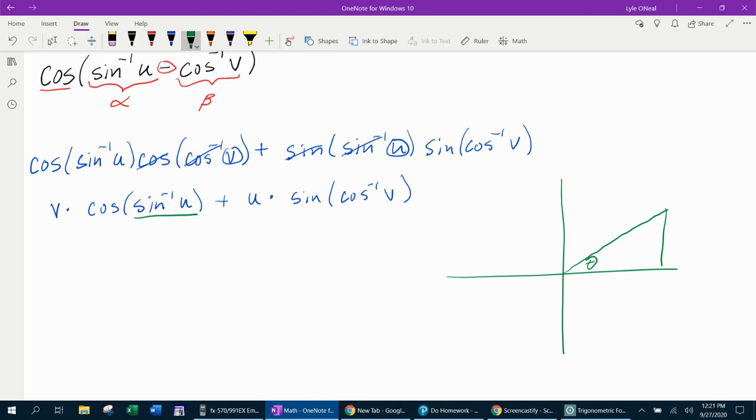Let's do this guy first in green. So remember that sine is y over r and u as a fraction would be u over one. So that would be y. Y is u over r is one. And then I would have to do the Pythagorean theorem to find the value of x here.